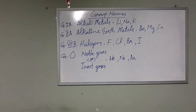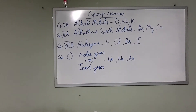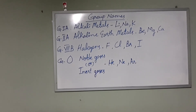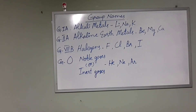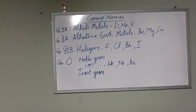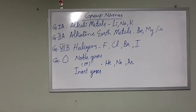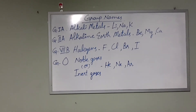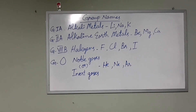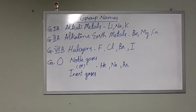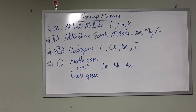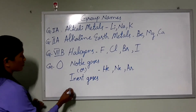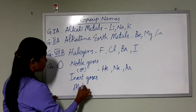Group 2A: Alkaline Earth Metals — Be, Mg, Ca. Group 7B: Halogens — F, Cl, Br, I. Group 0: Noble Gases or Inner Gases — He, Ne, Ar. Group 3A: Boron family metals.